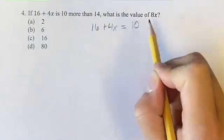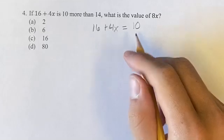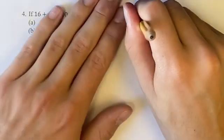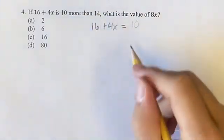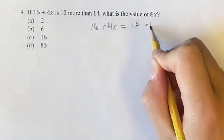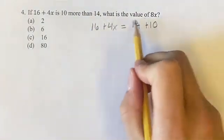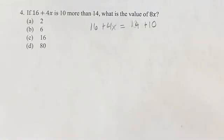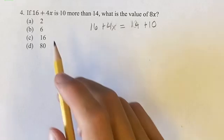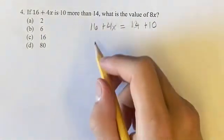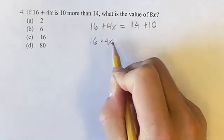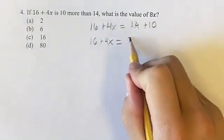And then we have 10 more than 14. So this is a little bit easier to think of it not as 10. So 10 more than 14 would be 14 plus 10. Again, you could have had the 10 first because 10 plus 14 is the same as 14 plus 10. But it's a little easier to think of 10 more than 14 as 14 plus 10 more. So now we have 16 plus 4x is equal to 14 plus 10 is 24.